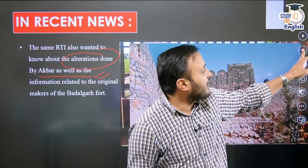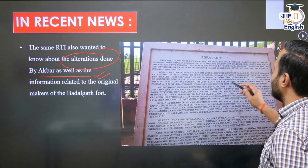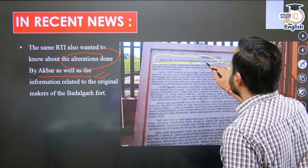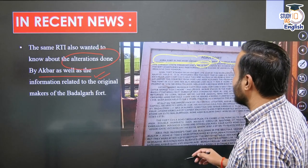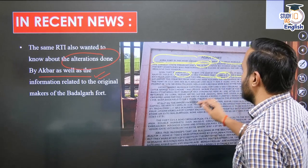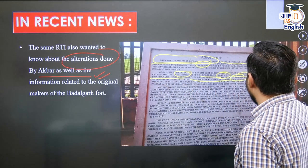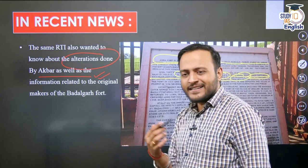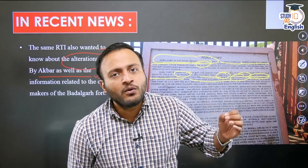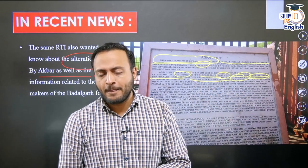The information board in front of the Agra Fort states that Agra is the most important fort of India and that the great Mughals — Babur, Humayun, Akbar, Jahangir, Shah Jahan, and Aurangzeb — lived here. It also mentions that the fort is recorded for the first time in 1080 AD when a Ghaznavid force captured it. Sikandar Lodi was the first Sultan of Delhi to shift to Agra and use the fort.